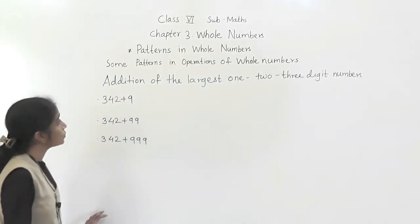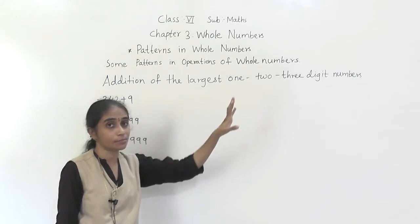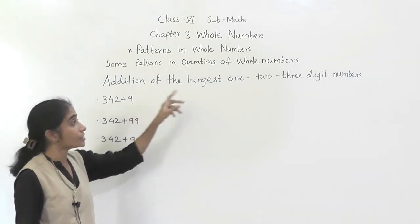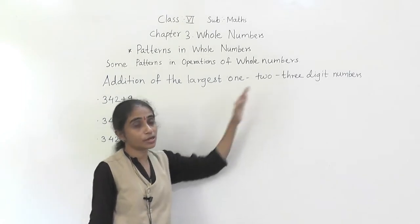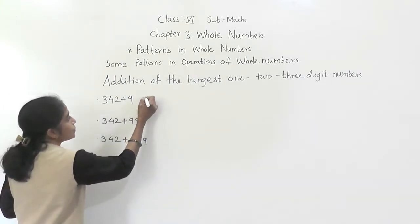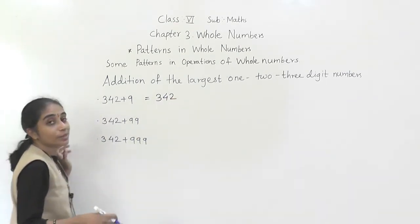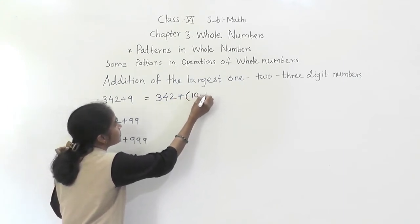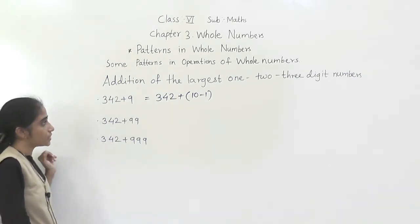Let's learn some patterns in operations with whole numbers — addition of the largest 1, 2, and 3-digit numbers. The largest 1-digit number is 9, the largest 2-digit number is 99, and the largest 3-digit number is 999. We will see what pattern arises. For 9: 9 means 10 minus 1, so 10 minus 1 equals 9.